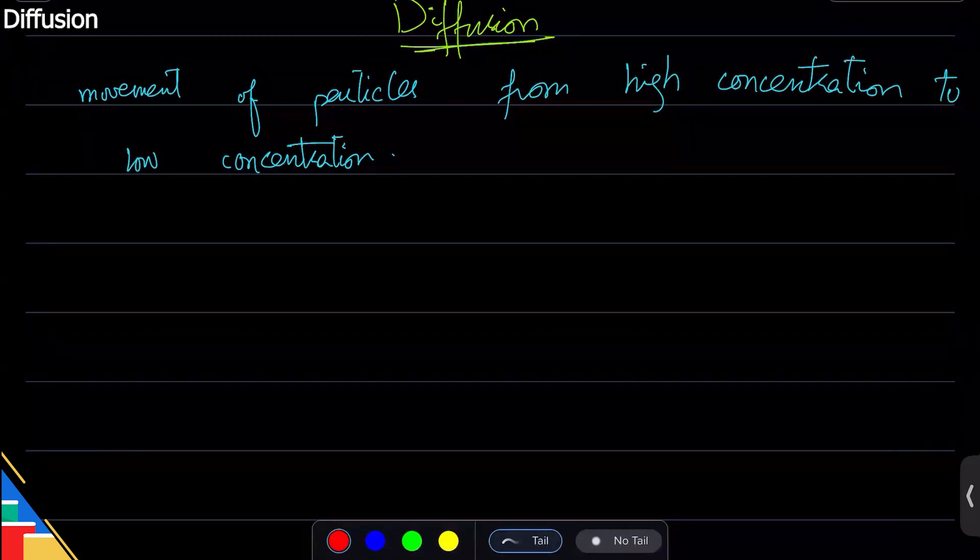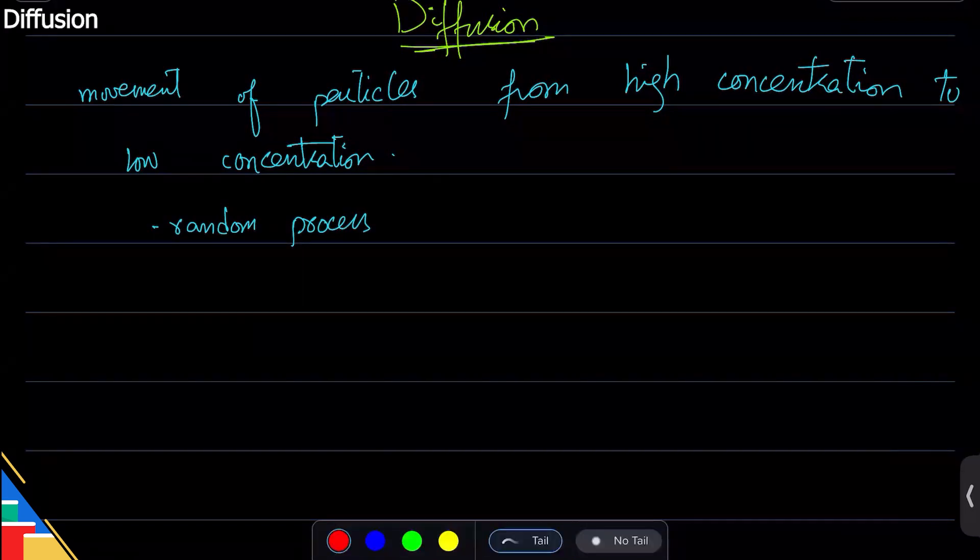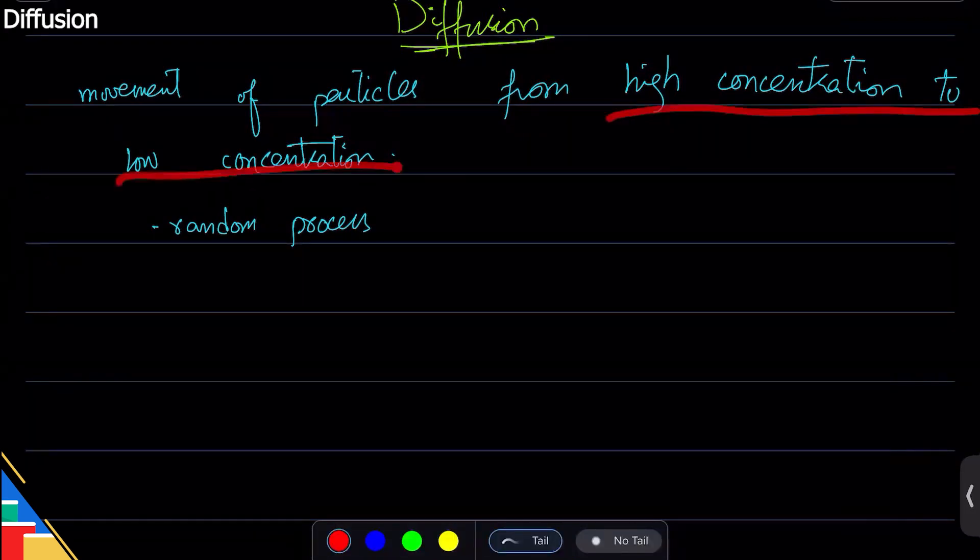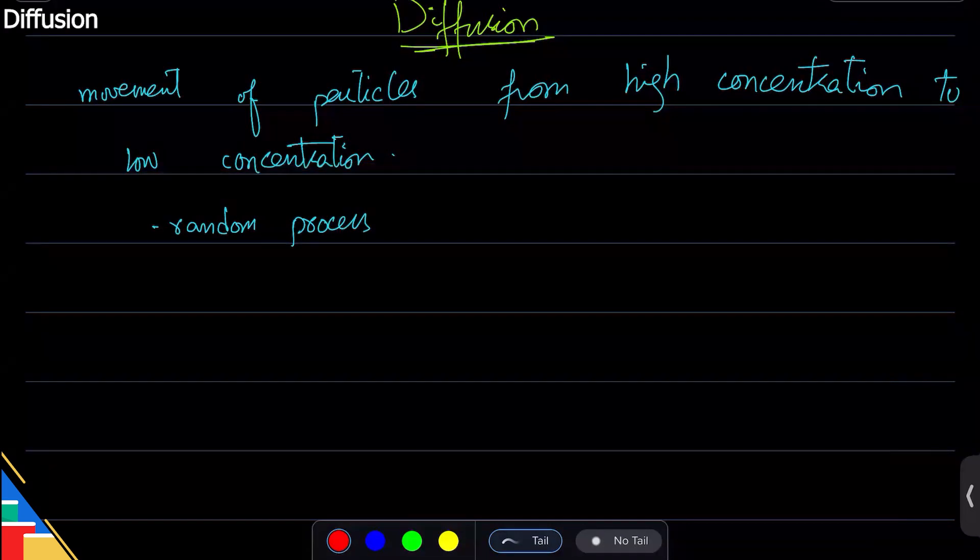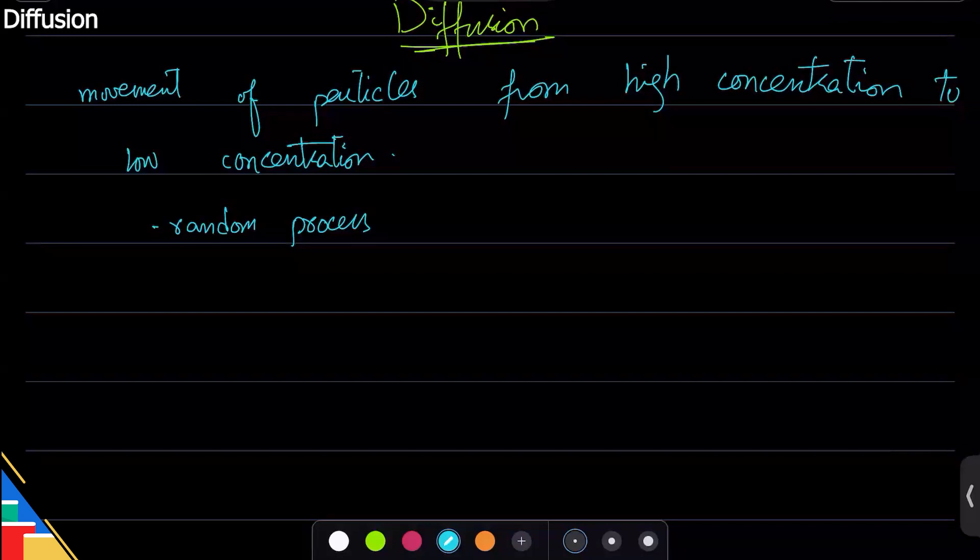Now interestingly, diffusion is a random process, and that's really weird. Random things are which you cannot predict. Particles move randomly because we cannot know which direction they'll go in, but at the same time we know the direction of diffusion is from high concentration to low concentration. How can a random thing do that? Really simple. Random things happen at the particle level, but the overall effect is still the same.